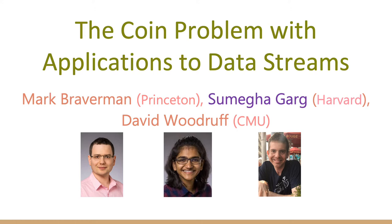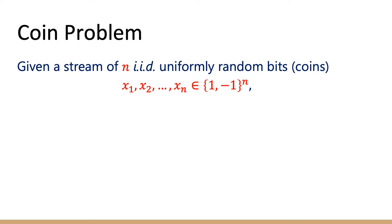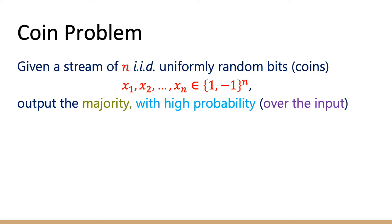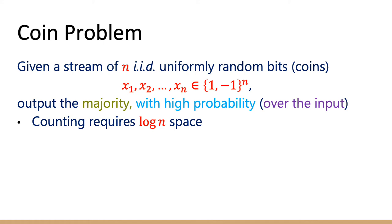Hi, thanks for tuning in. This paper studies the coin problem with applications to data streams. I'm Sumega, and this is joint work with Mark and David. The coin problem is defined as follows: given a stream of n identically and independently drawn uniformly random bits — each bit is one with probability half and minus one with probability half — a streaming algorithm needs to output the majority of these bits, correct with high probability over the uniform distribution. One approach is to keep track of the count (the sum of the bits), which requires O(log n) space, and check if it is greater or less than zero.